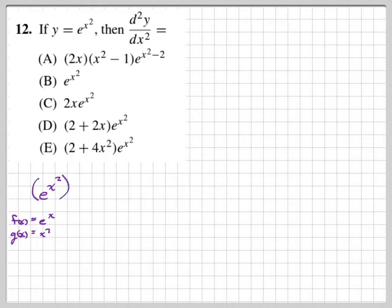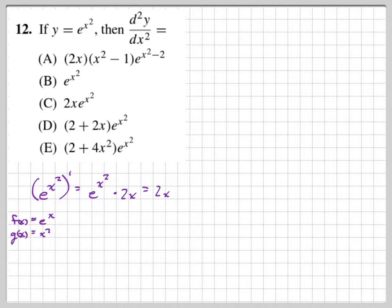If we take the derivative of this, we first take the derivative of e to the x, which is just e to the x — meaning anything inside stays inside. So we have e to the x squared. Then we multiply by the derivative of what's inside, which is x squared, giving us 2x. We'd write it as 2x times e to the x squared, so we don't need parentheses.